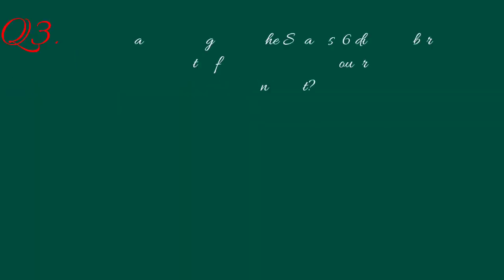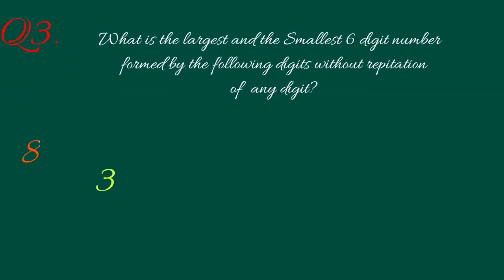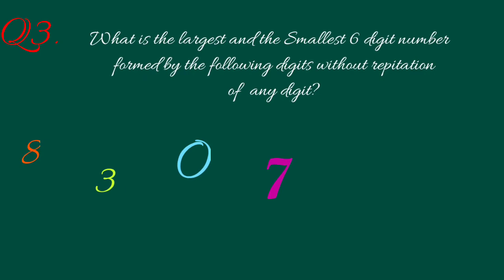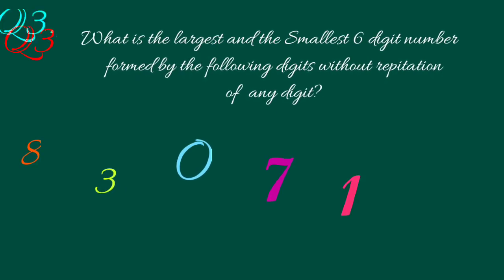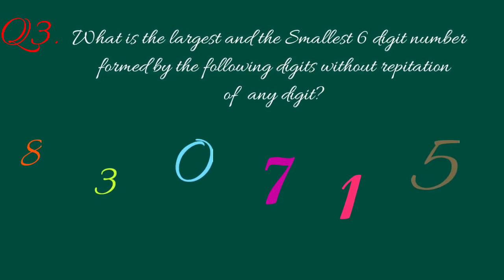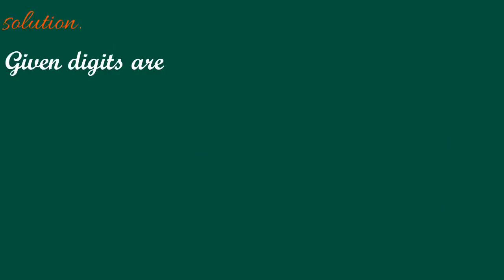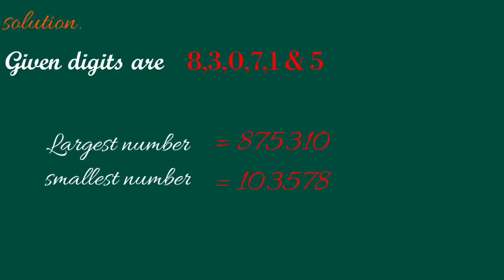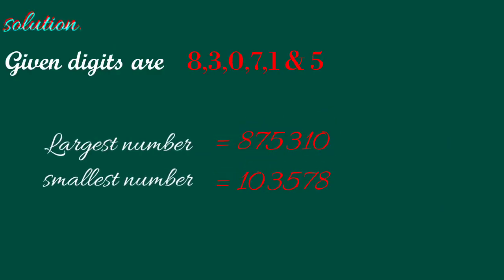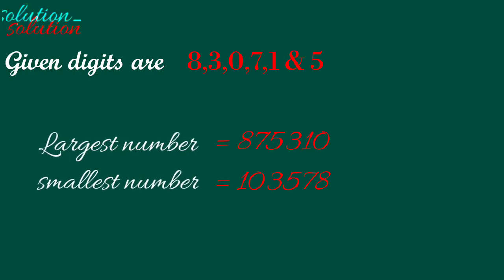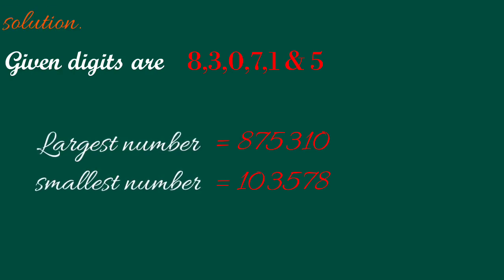Our next question is: what is the largest and the smallest 6-digit number formed by the following digits without any repetition of digits? The largest 6-digit number with the given digits will be 875310, and the smallest number will be 103578.